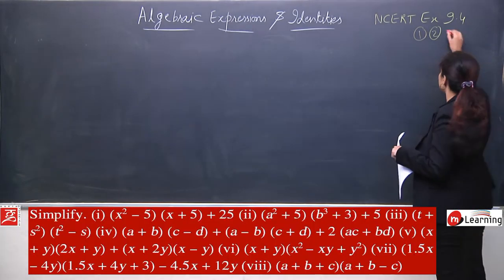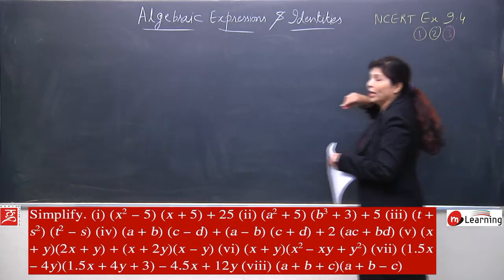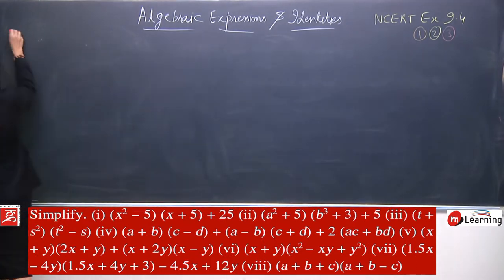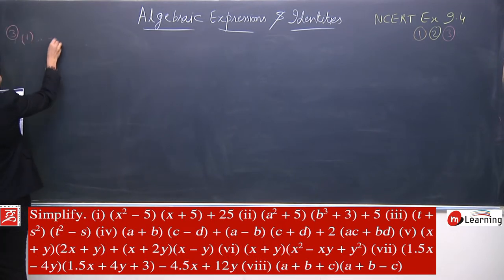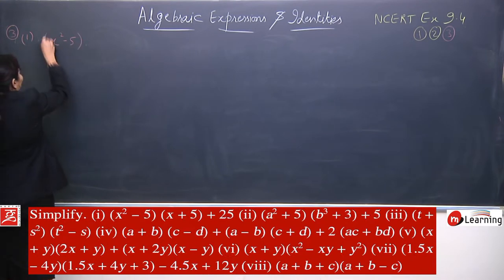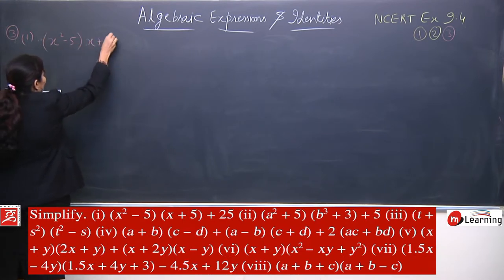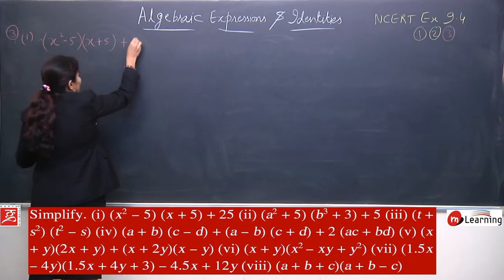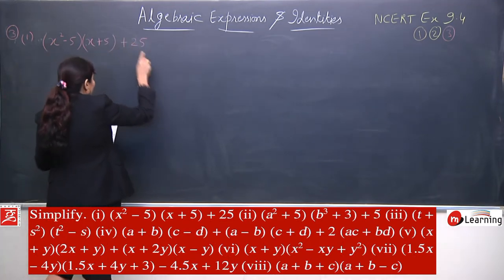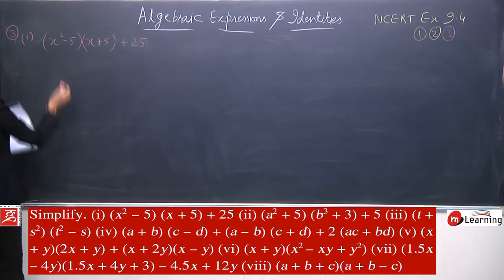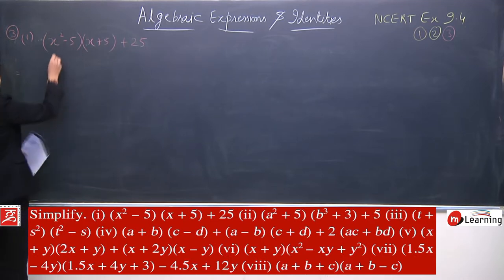Now, the last question of the exercise, which is quite harder. The level of this question is a bit hard. The first part of the question is x square minus 5, multiplied by x plus 5 plus 25 — both are binomials plus one more term plus 25. You have to solve it very carefully. The method will remain the same as multiplication.